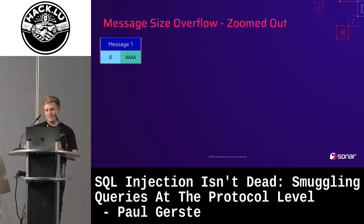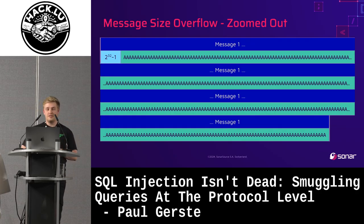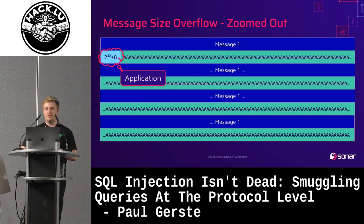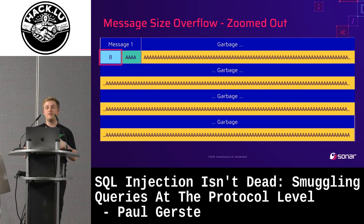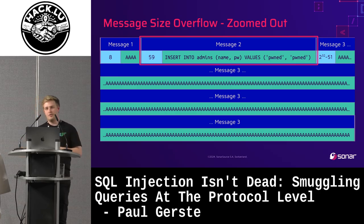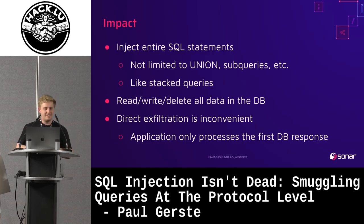Zooming out to understand the core concept: a small valid message is fine, a large but still representable message is fine. But when the message is too large, the application writes a small number while thinking it wrote a big one. The database sees a small first message and then garbage bytes — but if the attacker makes those bytes look like a real message, the database executes it. This allows injection of entire SQL statements into the connection between the application and the database.